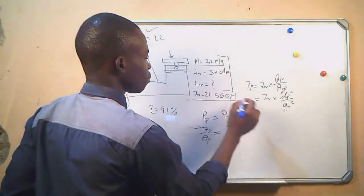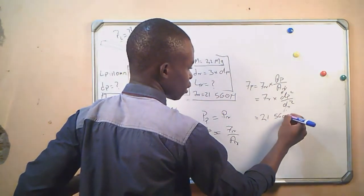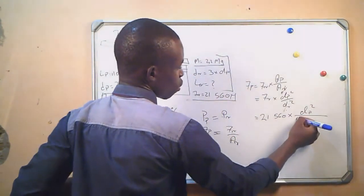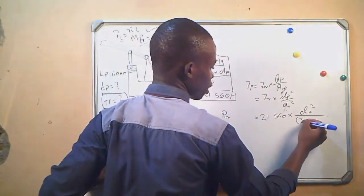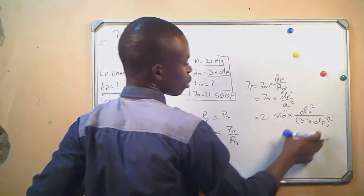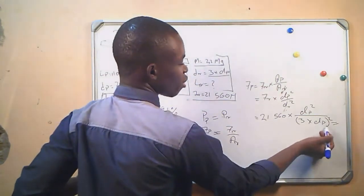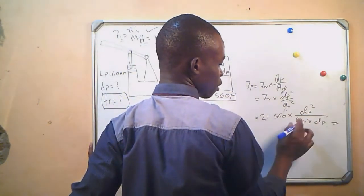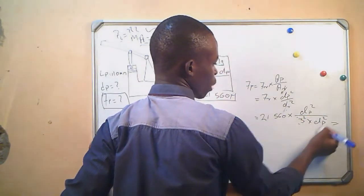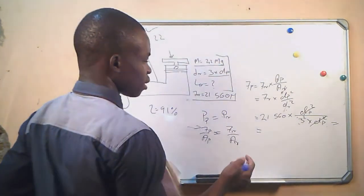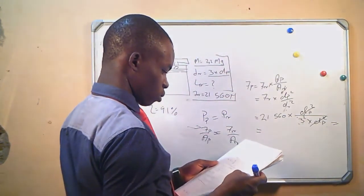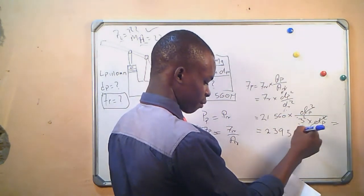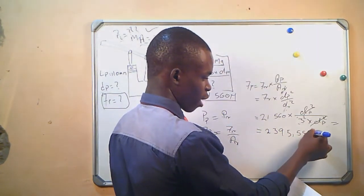When we substitute d_r = 3d_p into the formula, the d_p terms cancel and we are left with 1/3² = 1/9. So F_plunger = 21,560 / 9 = 2,395.556 newtons.